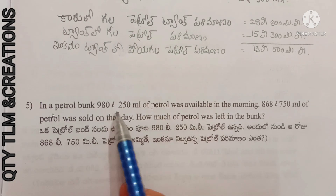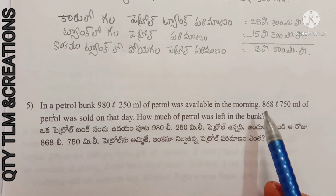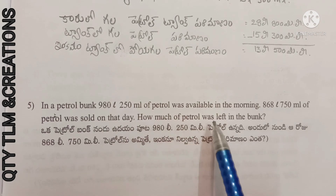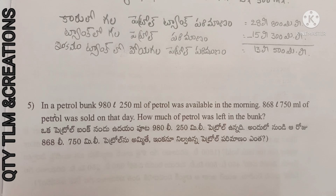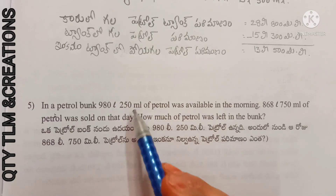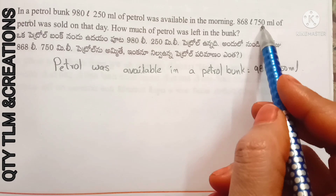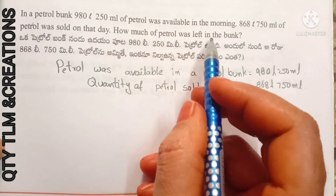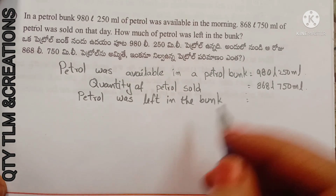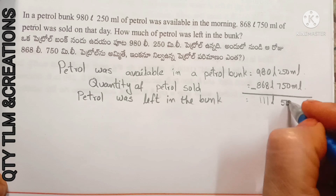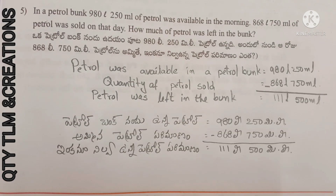Next question: in a petrol bank, 980 liters 250 milliliters of petrol was available in the morning. 868 liters 750 milliliters of petrol was sold on that day. How much petrol was left in the bank? Petrol available equals 980 liters 250 milliliters. Petrol sold equals 868 liters 750 milliliters. Petrol left in the bank equals 111 liters 500 milliliters. Remaining worksheets will continue in another video, until then take care.